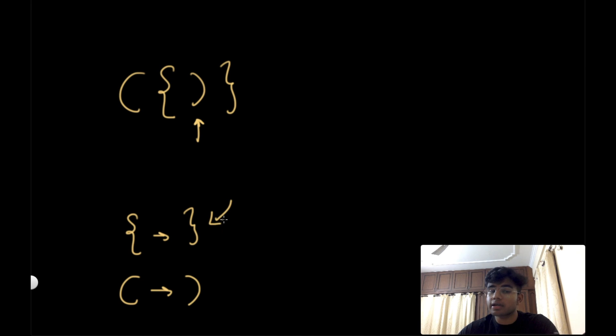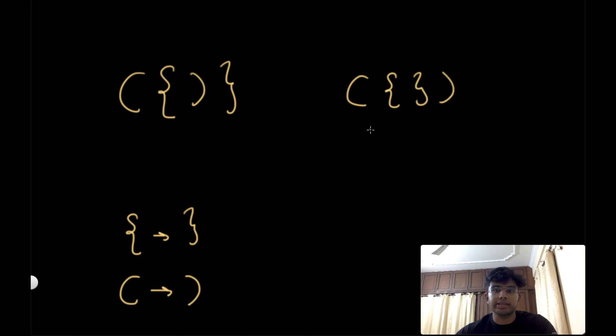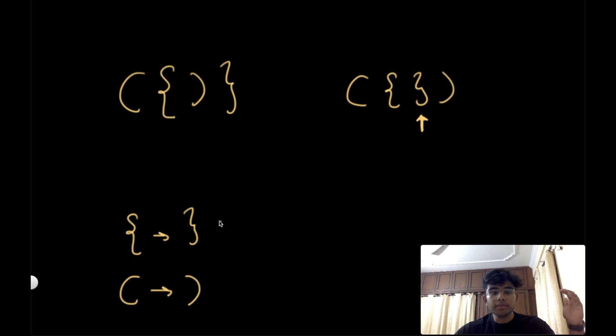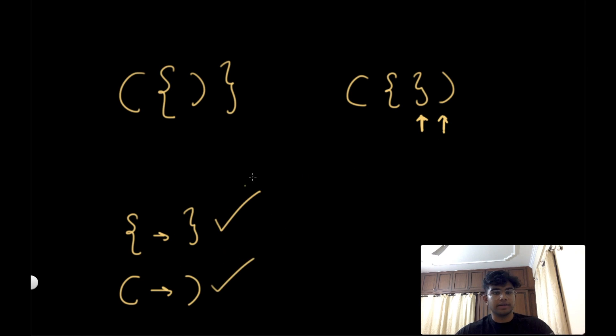Let's redo this. I'm at a closed rounded bracket, but I'm actually looking for a closed curly bracket, so it's not valid. Now let's make it valid — if we have the closed curly bracket up top, that satisfies the condition, and only after that can we close the rounded bracket. So the correct pair must appear in the correct hierarchy.